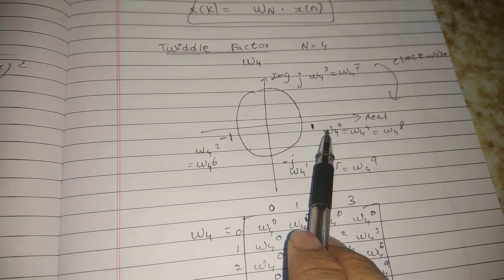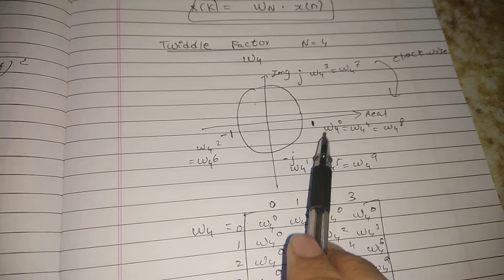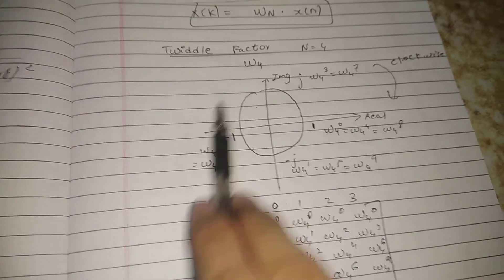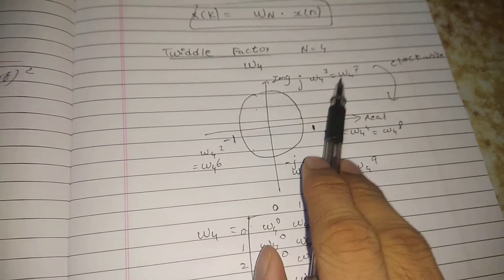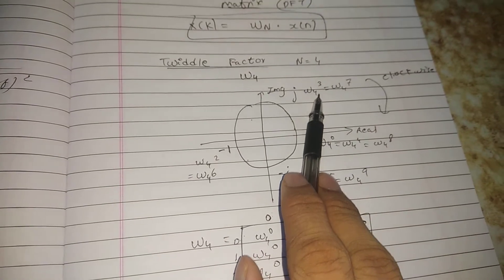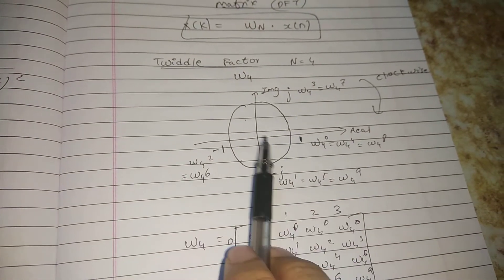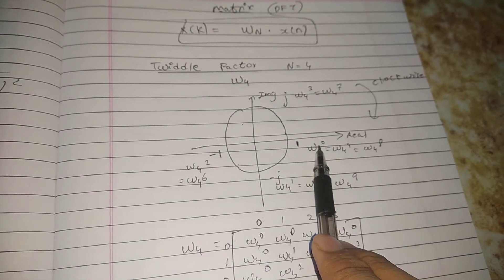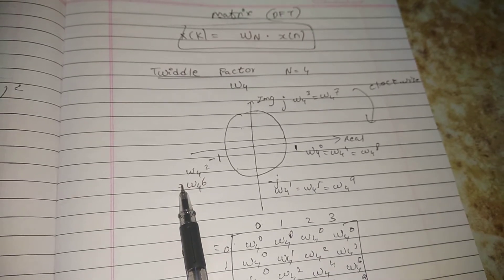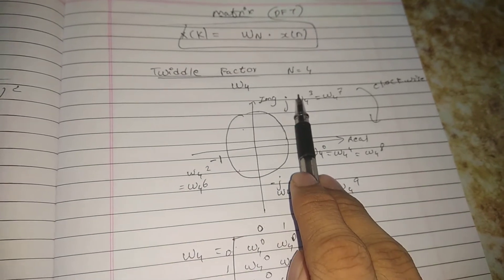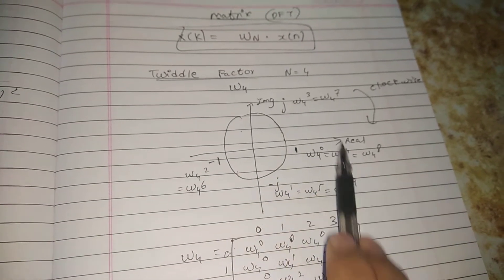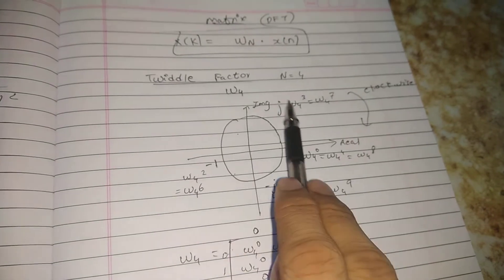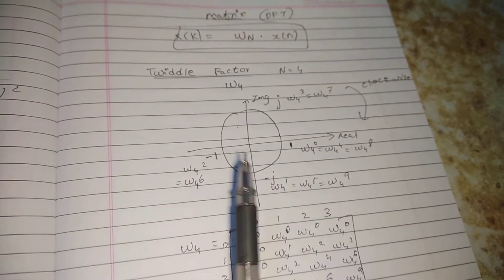Continuing the sequence clockwise: W4^8 and W4^9 complete the full listing from W4^0 through W4^9 on the unit circle.